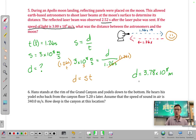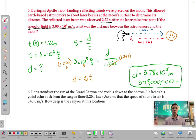Alternatively, you could write that as 378 million meters. Either way of presenting that would be okay, scientific notation or not.